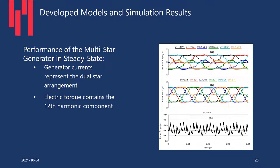In the steady state, let's look at the performance of the dual-star generator. You can see the phase voltages and phase currents — six currents showing the dual-star arrangement. There is a π/6 phase shift between each set of stars. The electric torque shows harmonics — the first harmonic you see is the 12th harmonic of the fundamental component. This is expected, and you could see similar phenomena in HVDC on the DC side current.